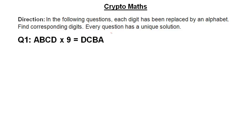Hello everyone, welcome to the class. In this class I am going to take questions of cryptomaths based on multiplication. So let's read the direction first. In the following questions, each digit has been replaced by an alphabet. Find corresponding digits. Every question has a unique solution. These are the basic assumptions of cryptomaths which are applied to almost all kinds of cryptomaths questions.